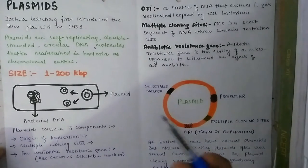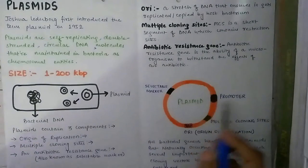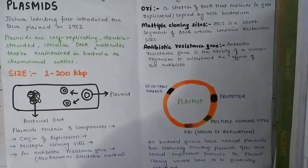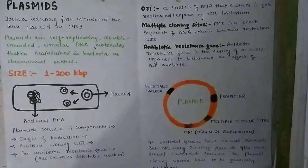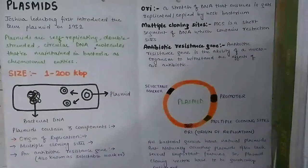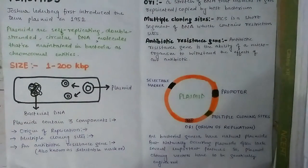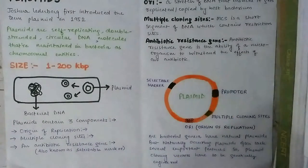The promoter is a region that initiates transcription of a particular gene. This promoter also defines the direction of transcription of a particular gene and indicates which DNA strand has to be transcribed.